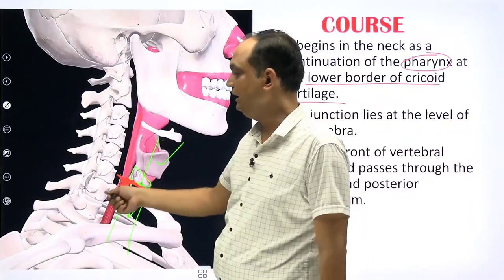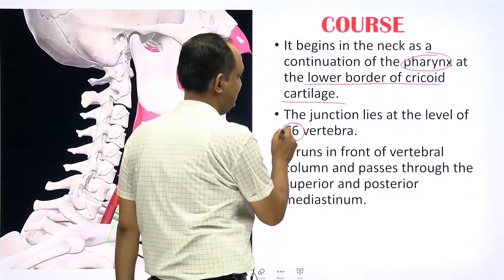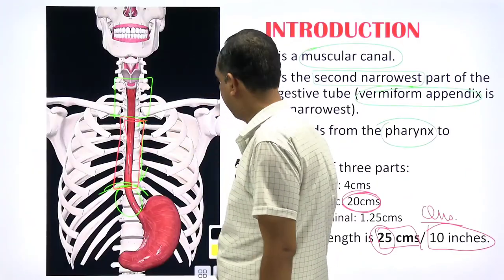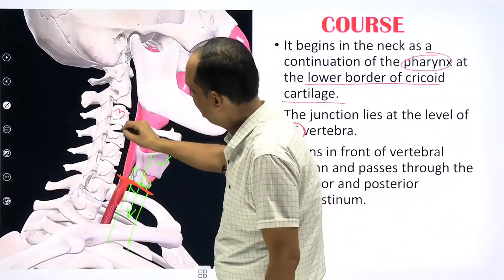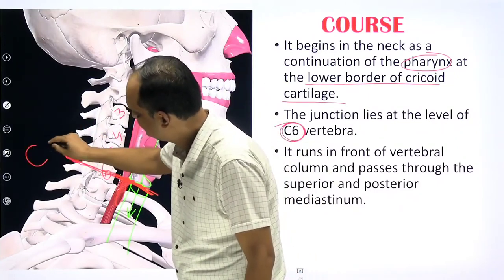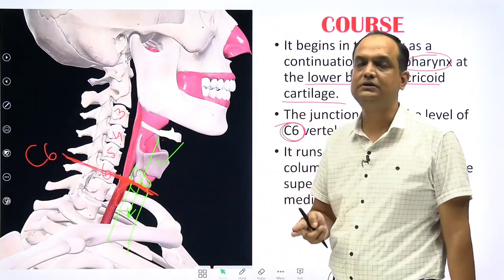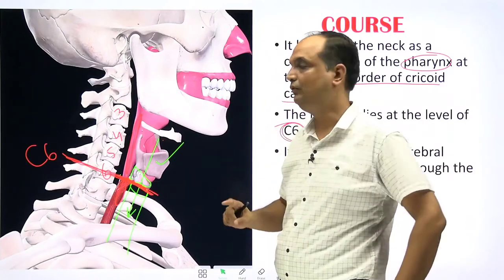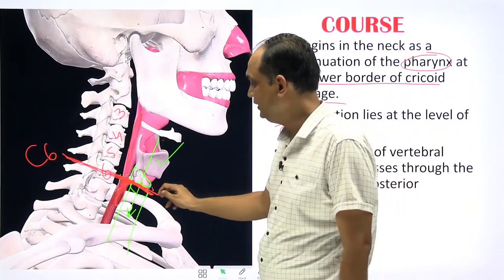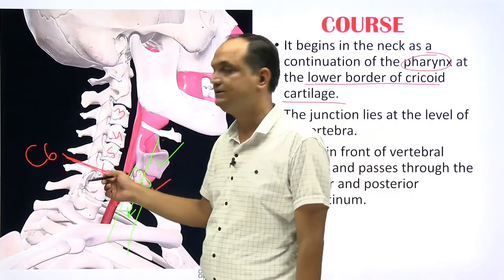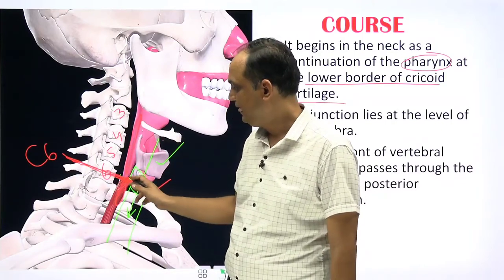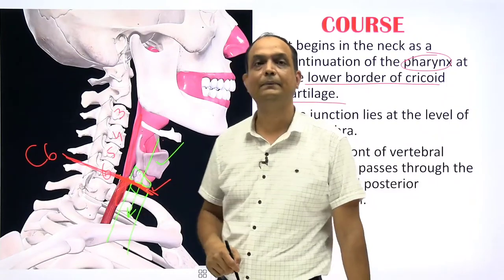At the vertebral level, posteriorly, the esophagus begins at C6 — the sixth cervical vertebra. So there are two exam answers for where the esophagus starts: the lower border of the cricoid cartilage, or C6 vertebra. The cervical vertebrae are present posteriorly, and at the level of the sixth cervical vertebra you have the junction of the lower end of the pharynx and the upper part of the esophagus.